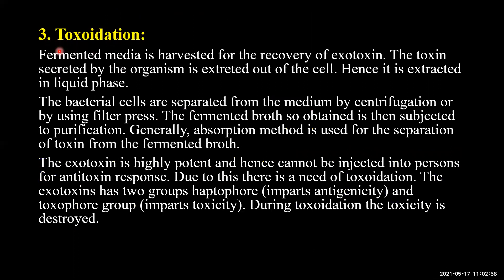After the incubation period of six to seven days is over, we collect and harvest the exotoxin and proceed to toxoidation. The fermentation media is harvested for recovery of exotoxin. Since the toxin is an exotoxin secreted outside the cell, it is present in the liquid phase. Bacterial cells are first separated from the medium by centrifugation or filter press. The fermented broth obtained contains exotoxin and is subjected to purification using an absorption method.